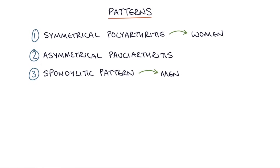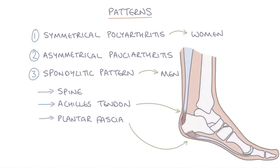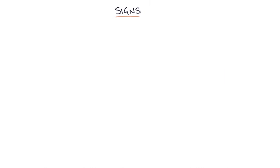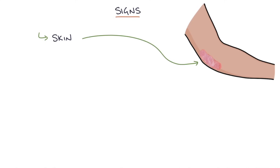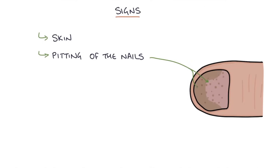Other areas that can be affected include the spine, the Achilles tendon, and the plantar fascia. When looking for signs of psoriatic arthritis, first check the skin for any plaques of psoriasis. Another sign is pitting of the nails — these are tiny pinprick-like pits that occur on the fingernails.